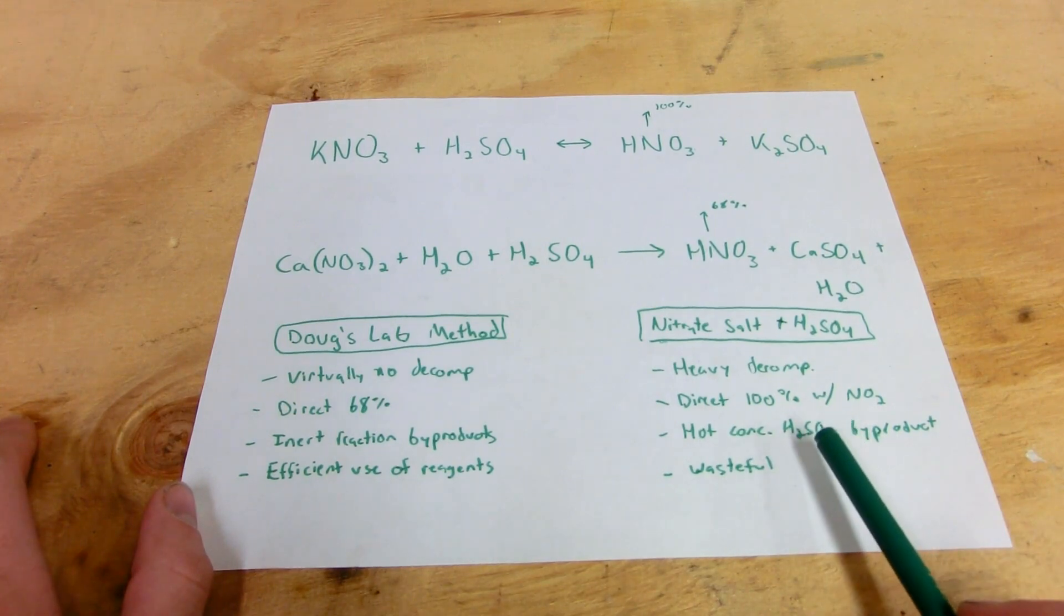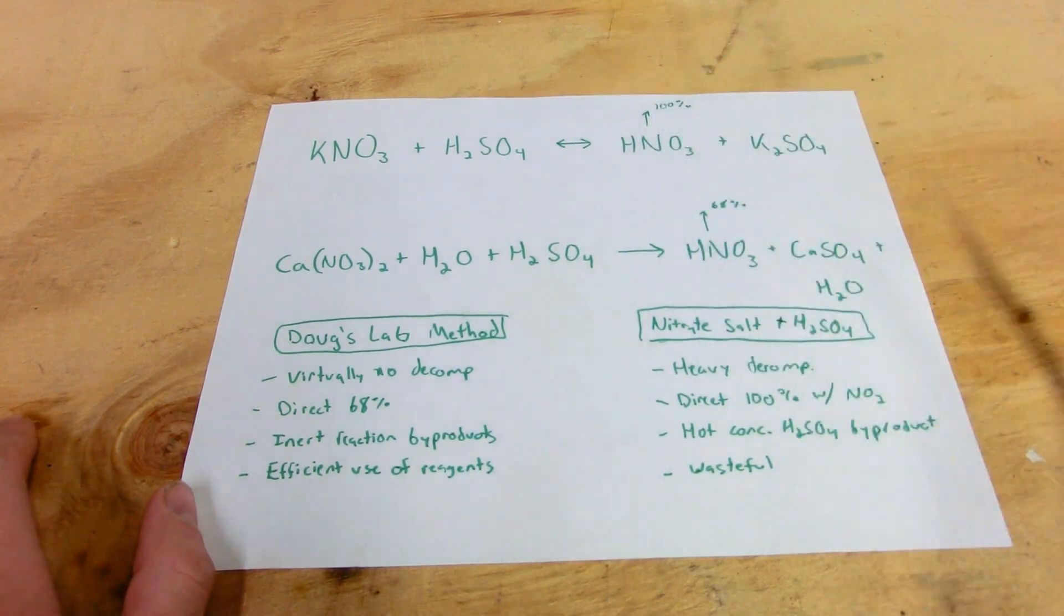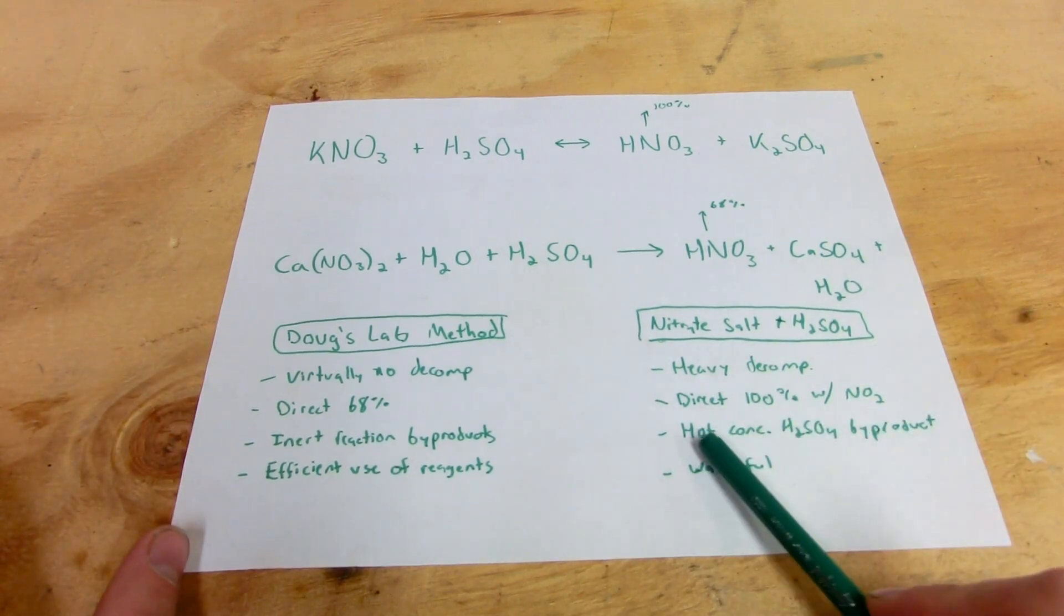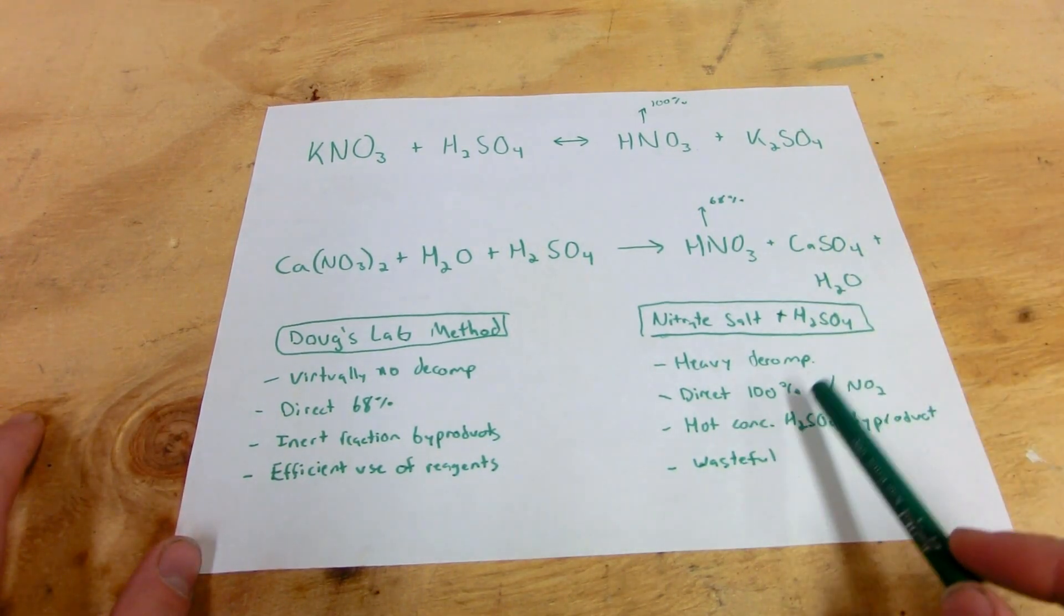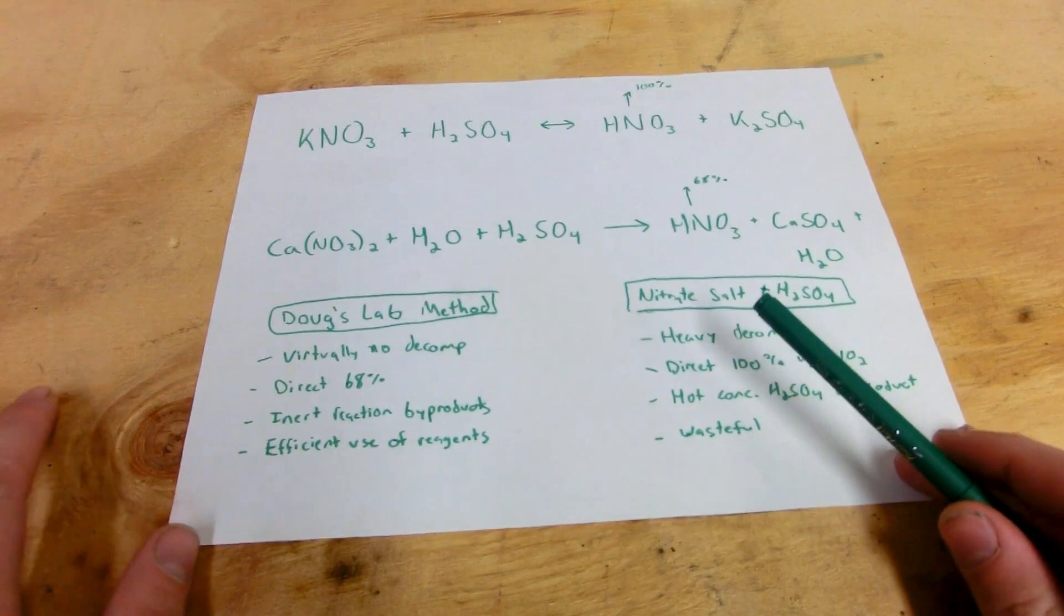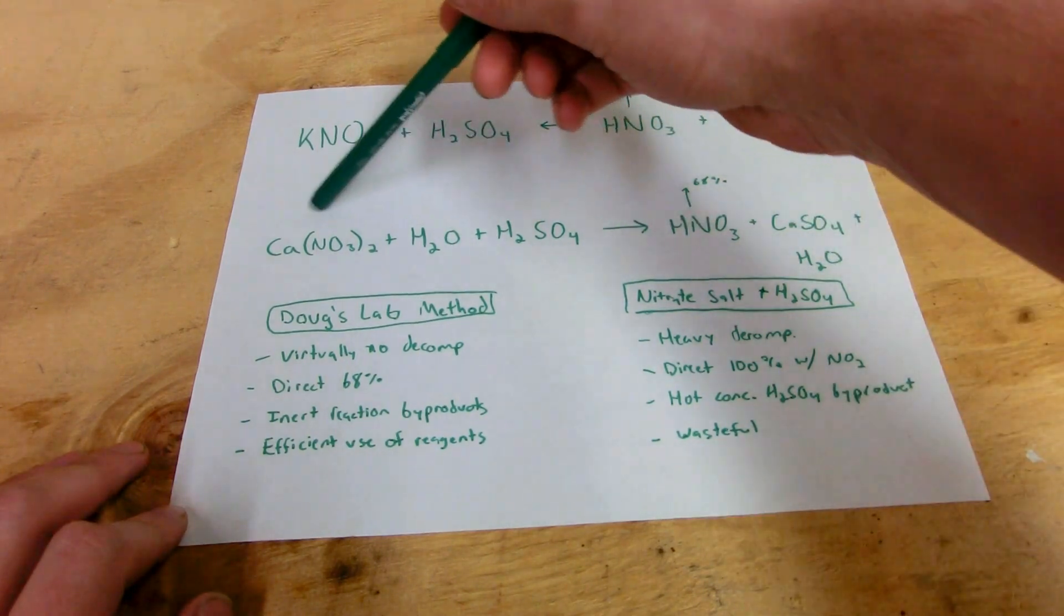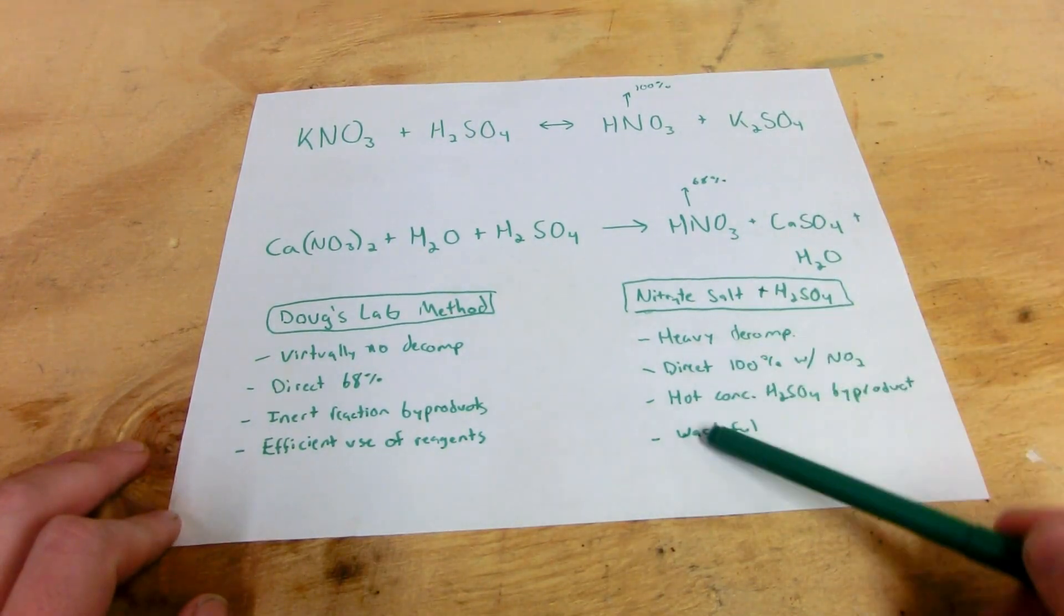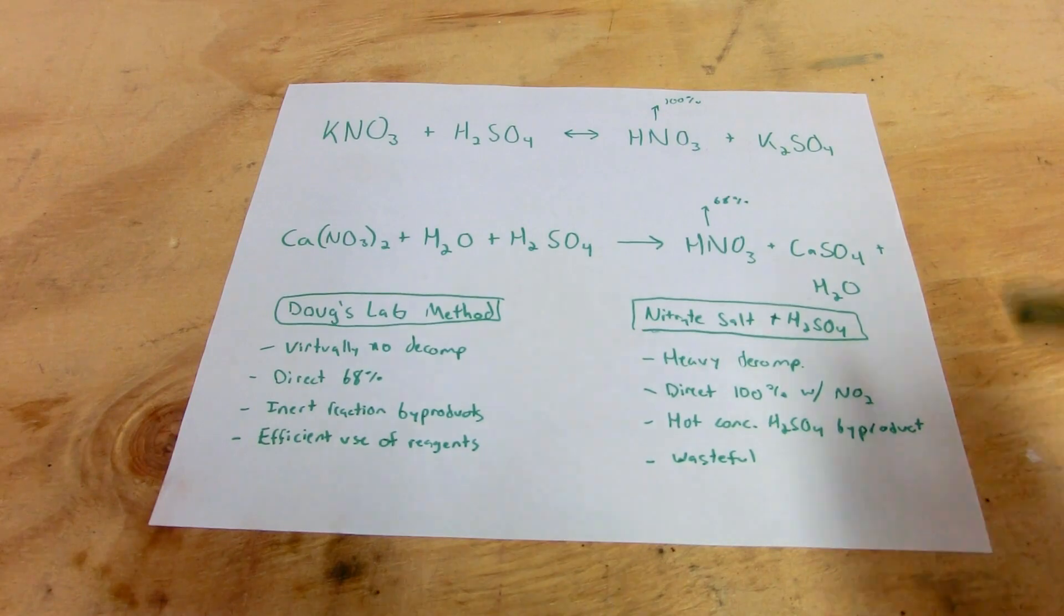To review, if you look at my method versus the nitrate-salt method: my method has virtually no decomposition to nitrogen dioxide, whereas the nitrate-salt method you get some pretty heavy decomposition. Mine is synthesized direct known 68% concentration. This method synthesizes direct 100% nitric acid, but it's got a lot of nitrogen dioxide dissolved in it so it's brown and it's fuming. My reaction byproducts are inert because I use excess calcium nitrate. With excess calcium nitrate, you use all of your sulfuric acid. In this method, the byproduct is concentrated sulfuric acid because you have to use excess sulfuric acid to keep this potassium sulfate liquefied. My reaction byproducts are essentially gypsum versus warm gypsum and hot concentrated sulfuric acid mixed with potassium sulfate. I have more efficient use of reagents in that the cheapest product is the excess reagent.